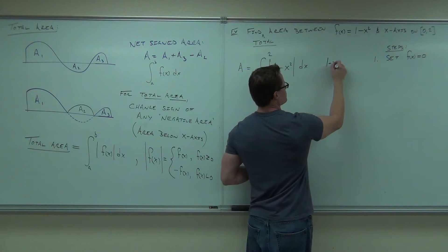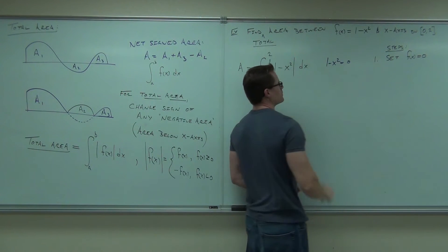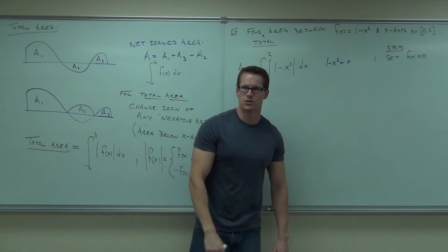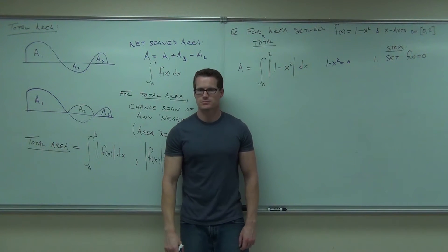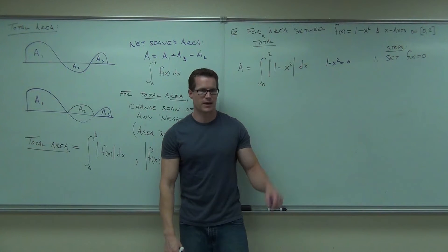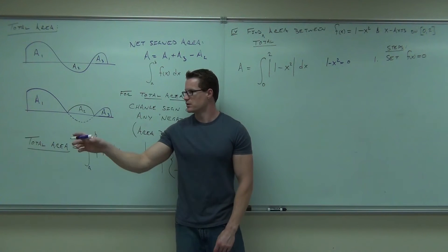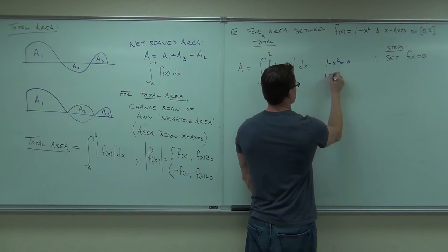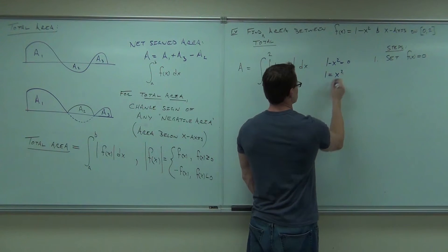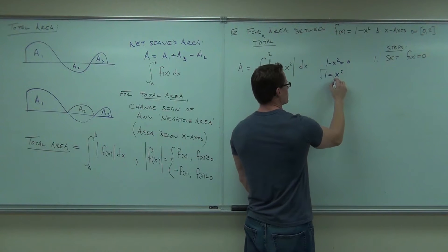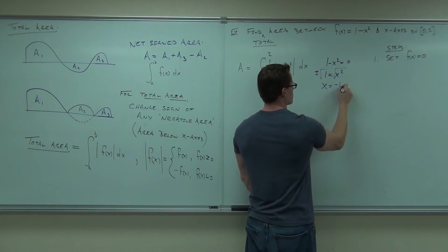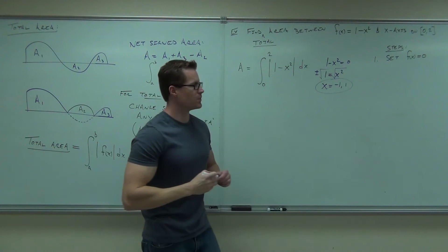We're going to get 1 minus x² equals zero. Probably add x², and then square root both sides: plus or minus x equals negative one and one.